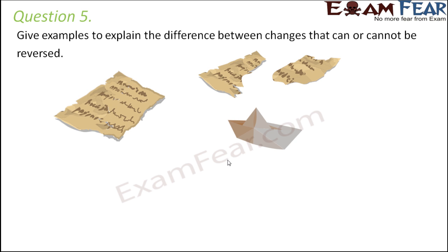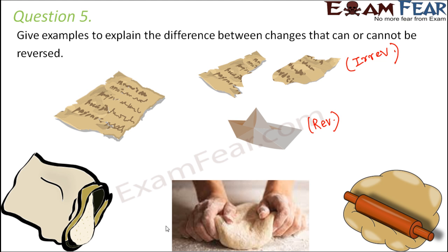But if you use the same paper to make a paper boat, you can again unfold it to get back the same paper — so that would be reversible, whereas tearing is irreversible. Similarly, if you take some flour and prepare a dough, once you prepare the dough you cannot get back the flour, so this change is irreversible. However, when you roll this dough into rotis, that is reversible — because if you cannot roll a chapati of the exact shape, you can mold it back into dough and try again. So rolling is reversible, but making the dough from flour is irreversible.